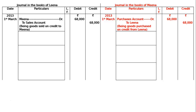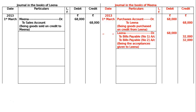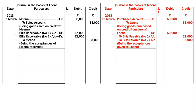Lina drew two bills of exchange of equal amount upon Mina, payable after three months — two bills of Rs. 32,000 each. In the books of Mina, Lina is debited Rs. 68,000; bills payable number one account Rs. 32,000, bills payable number two account Rs. 32,000. Being the acceptance given to Lina. In the books of Lina, bills receivable number one account debited Rs. 32,000, bills receivable number two account debited Rs. 32,000, to Mina Rs. 68,000. Being the acceptance of Mina received.